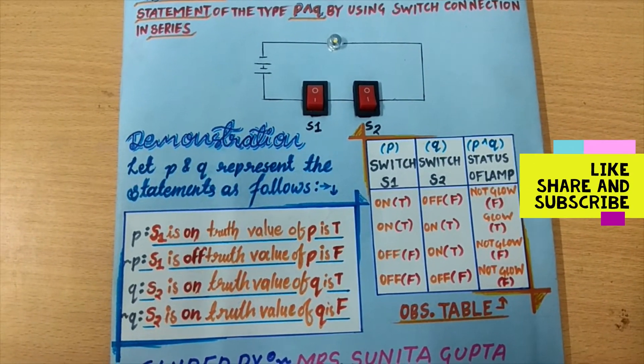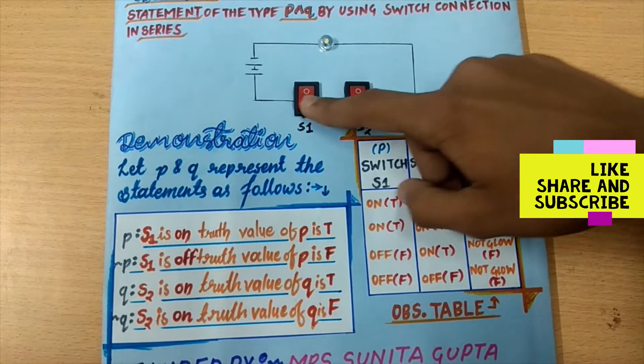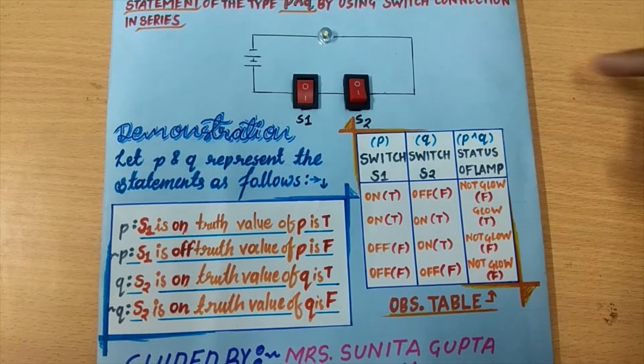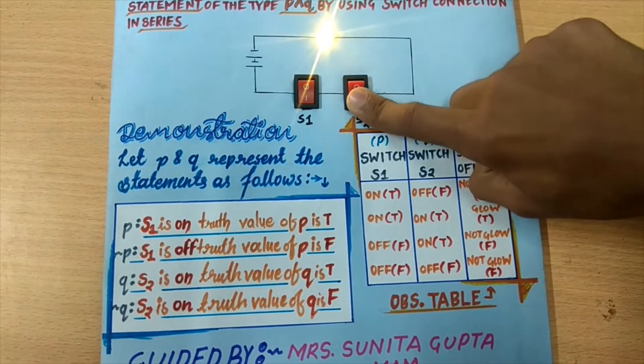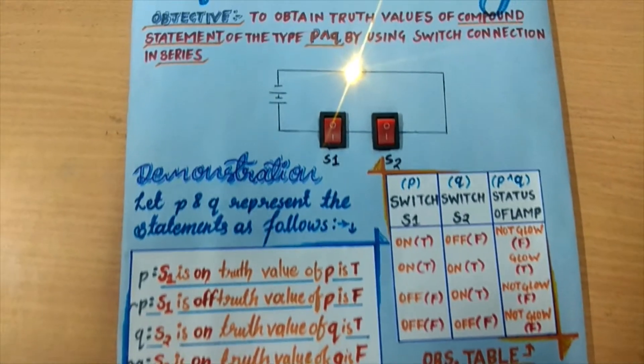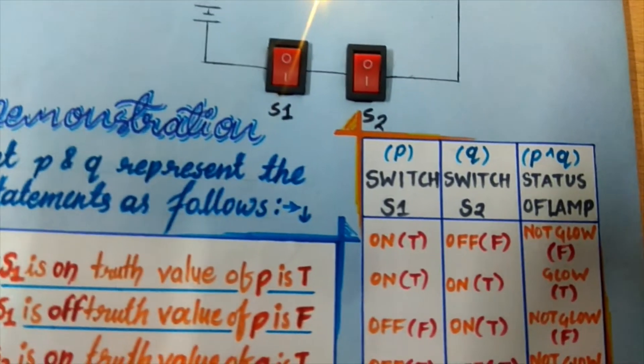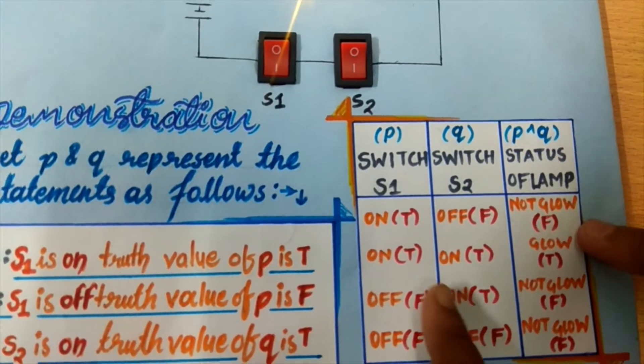Here truth value of P is true, then we make S1 on and truth value of Q is also true, then S2 is on. So the bulb does glow. So the truth value of compound statement P and Q is true.